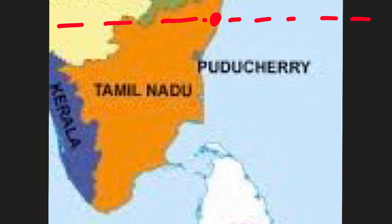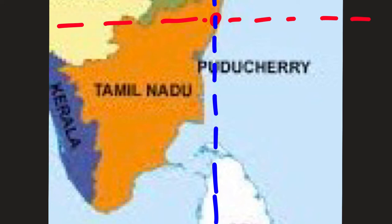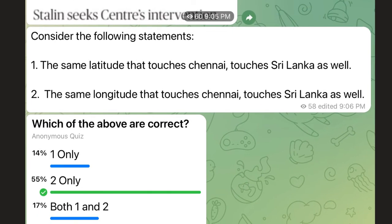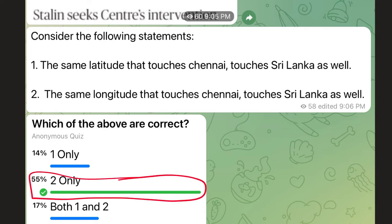Coming to the longitude statement — longitude means vertical lines. There's a very high likelihood that a longitude touching Chennai will also touch Sri Lanka, because Chennai is a coastal city and Sri Lanka is very close to India towards the southeastern part. Unless you were confused that Chennai is towards the southeastern part of Tamil Nadu rather than the northeastern part, the longitude statement should not have been a problem. This question could have been solved through logic — just class-sixth knowledge. So the answer is 'two only.'